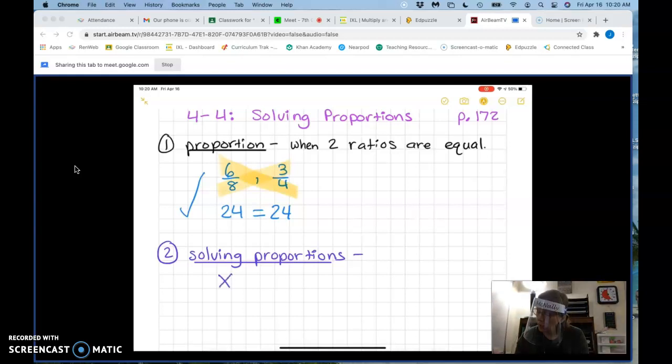So write this example down on your paper. X over 4 equals 9 over 10. So I have two fractions, two ratios that are equal to each other but I don't know what one of the numbers is. What did they use for one of the numbers? X. But guess what? I can use this same cross multiply idea to find out what X equals. So that's what we're gonna do now.